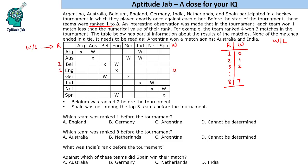One of the questions is which team was ranked 1 before the tournament — the answer is England. England will lose all their matches, so all other teams will win their match against England. Argentina, Australia, Germany, India, and Netherlands will all win their matches against England, and we fill in the table accordingly.